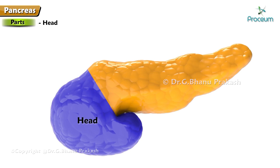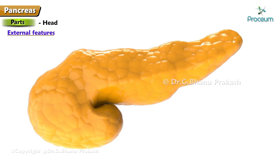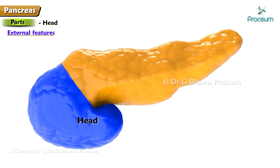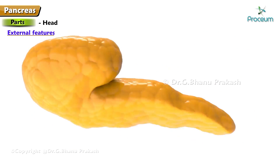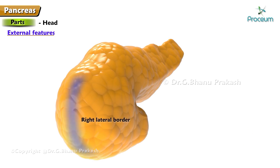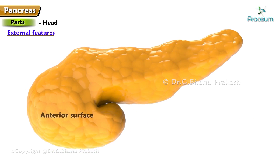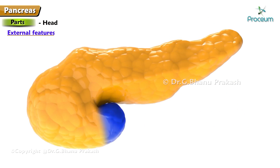Head of the pancreas: it is the enlarged, disc-shaped, flattened right end of the pancreas, lying in the concavity of the C-shaped duodenal loop at L2 vertebra. External features: the head of the pancreas has three borders — superior, inferior, and right lateral — two surfaces — anterior and posterior — and one process, the uncinate process.